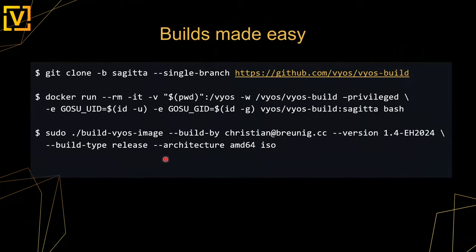You can build your own ISO image from the LTS repository using three simple commands. We provide a Docker-based build environment. You clone our source and run a simple command to build the ISO image. With the Sagitta branch you'll get a nice image of the current or future LTS version. It's quite simple to produce your own binaries.